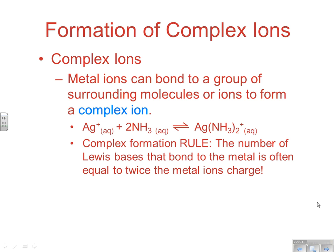The rule for complex ion formation is that the number of Lewis bases that bond to the metal is often equal to twice the metal ion's charge. So silver is a plus one, double that is two. So notice two ammonias bond to the silver. It doesn't work all of the time, but it works 80% to 90% of the time.